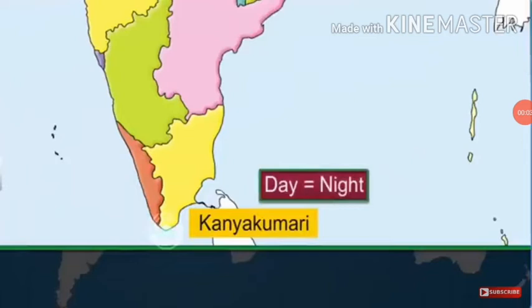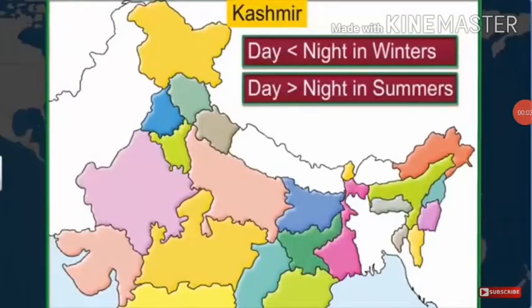The latitudinal extent influences the duration of day and night as one moves from south to north. The southernmost tip of the Indian mainland is Kanyakumari. The difference between the duration of day and night is hardly felt at Kanyakumari because it is situated near the equator, where places have almost equal duration of days and nights. In Kashmir, the difference is of 5 hours because it is far away from the equator, making day and night patterns totally different from Kanyakumari.